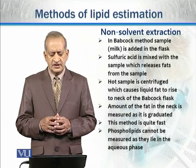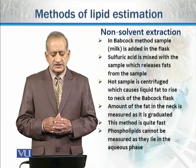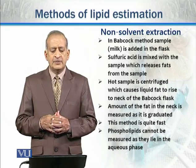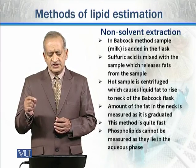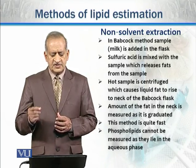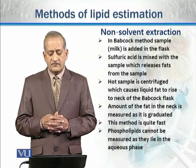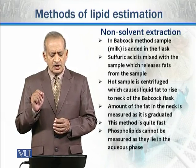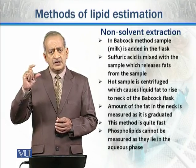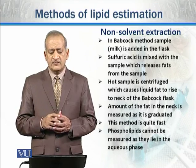There is no solvent here. Then the hot sample is centrifuged, which causes the liquid fat to rise to the neck of the Babcock flask. We heat the sample so that it converts to liquid fat, and that rises to the neck of the Babcock flask. The amount of fat trapped in the neck is then measured.